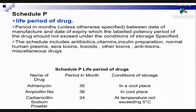Schedule P includes antibiotics, vitamins, insulin preparations, normal human plasma, serotoxins, toxoids, other toxins, antitoxins, and other miscellaneous drugs.